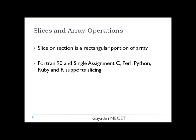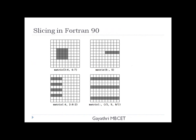Now we will see some operations on arrays. The first operation is called a slice or section, which is stripping a rectangular portion of the array. Fortran 90, SAC (Single Assignment C), Perl, Python, Ruby, and R support the slicing operation. This is an example of slicing: from the entire array, you are slicing a portion.